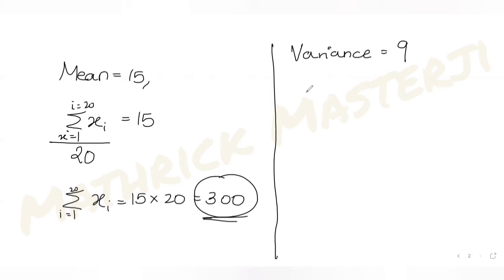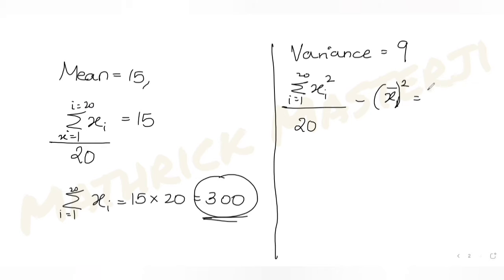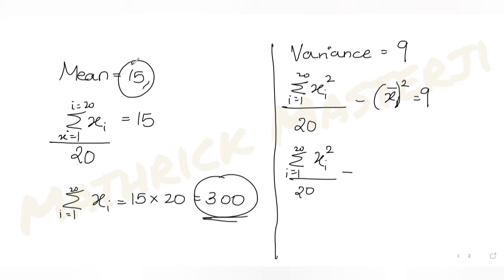The variance is 9. The formula for variance is: summation of squares of observations from i=1 to 20, divided by the number of observations, minus the square of the mean (x̄²) equals 9. So: Σxi²/20 − 15² = 9, which gives Σxi²/20 = 9 + 225 = 234.